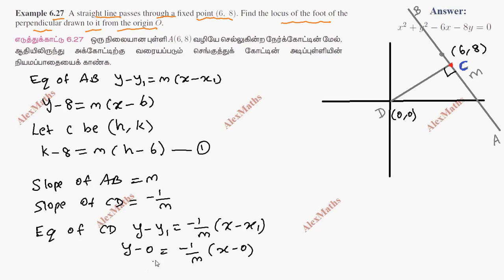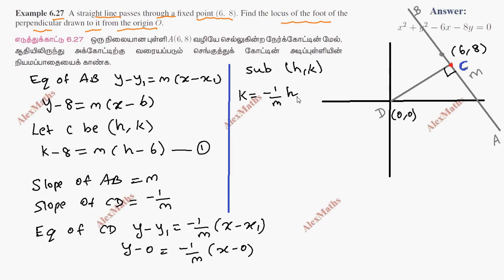Now, the location of point C is (H, K) on line CD. Substituting H and K: K equals minus 1 over M times H, which gives us the second equation. From the first and second equations, we will eliminate M. From the second equation, M equals minus H over K.